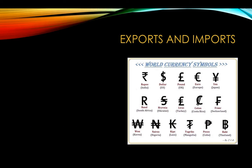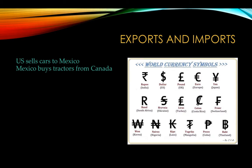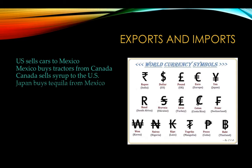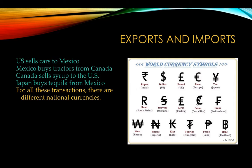Let's look at exports and imports. A few transactions, for example: the U.S. is selling cars to Mexico, Mexico is buying tractors from Canada, Canada is selling maple syrup to the United States, Japan is buying tequila from Mexico. What do all these transactions have in common? They're involving countries that have different currencies.